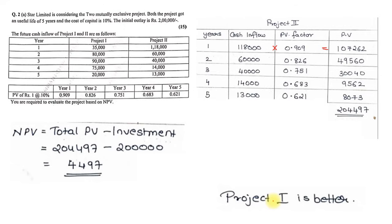The next question is Question Number 3A — calculate the Degree of Operating Leverage, Degree of Financial Leverage, and Combined Leverage for two companies: Firm ABC and Firm PQR. The data given includes sales, variable cost per unit, fixed cost, output in units, and interest.